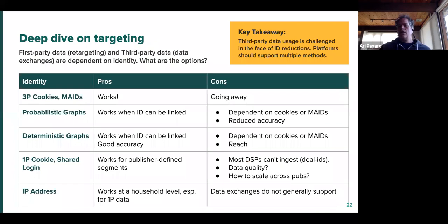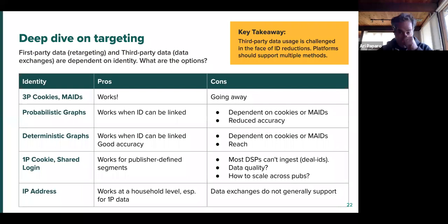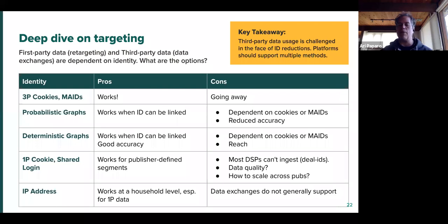Second use case: targeting. First-party and third-party data targeting are dependent on identity. Sure, we have contextual — I'm not going to talk about contextual. We're talking about using identity for targeting, which is really commonly used in the digital marketplace right now and is probably one of the most affected things by the loss of identity. Third-party cookies work but they're going away. Probabilistic and deterministic graphs are really important here — when the ID can be linked, using a graph to target a segment is a pretty common technique in most platforms. Sometimes the buyer will value it lower: an exact match on a third-party cookie or MAID might be higher value than a graph match. But it's a big part of getting completeness around identity.